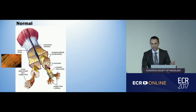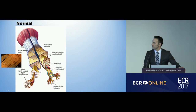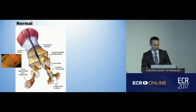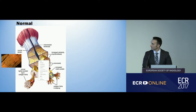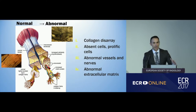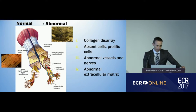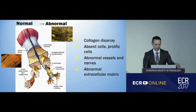A normal tendon looks like this — tightly packed collagen fibres with very little blood flow and extracellular matrix. When you see a patient or an athlete with tendinopathy, you tend to get haphazard collagen disarray, areas of absent cells and proliferative cells, infiltration of blood vessels, and those blood vessels bring nerves that we think cause pain. You also have abnormal extracellular matrix in the tendon.